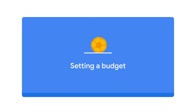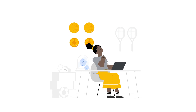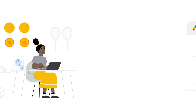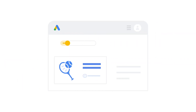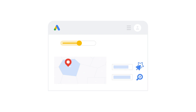Setting a budget. With Smart Campaigns, you'll need to set a daily budget. When you start, Smart Campaigns will recommend a budget based on your business, location, and keyword themes, as well as an estimate of the clicks and impressions you'll get with that budget.